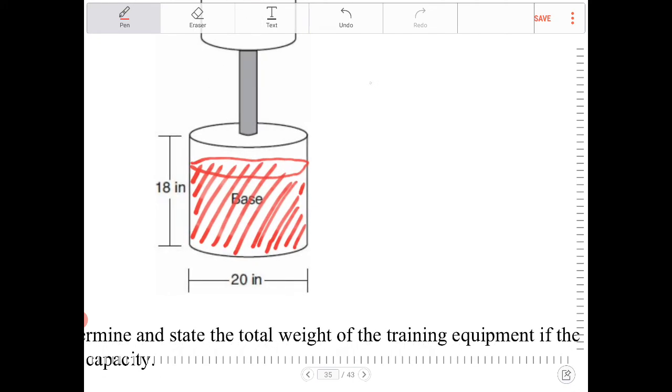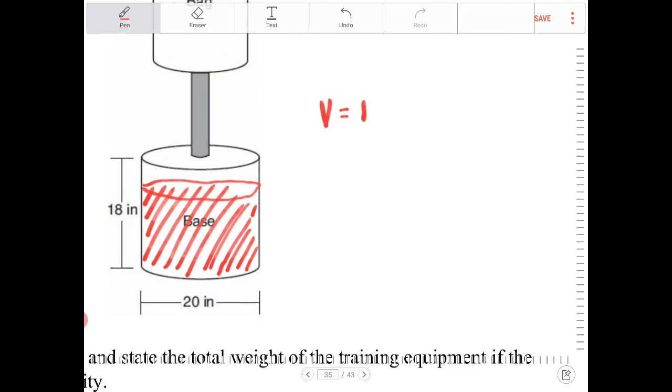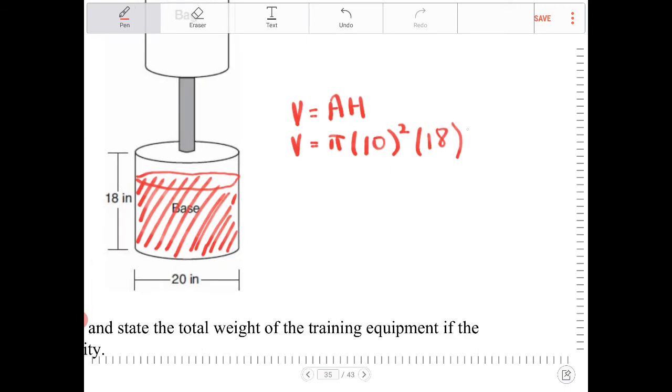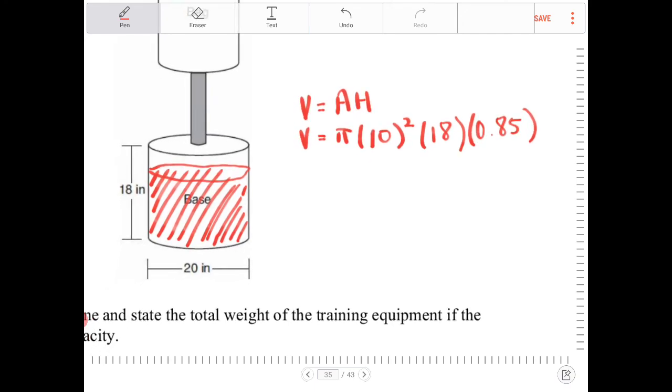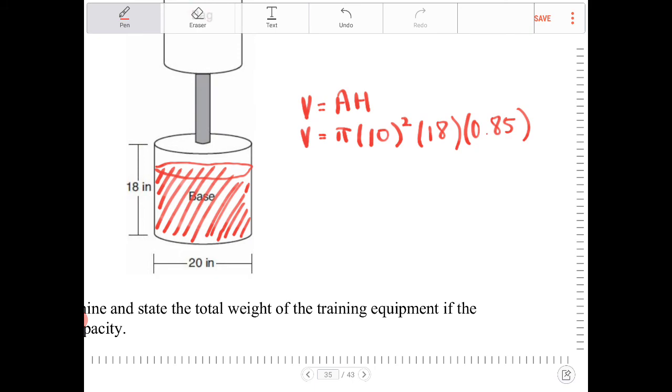So we are going to find out what is the volume of the cylindrical base. Because we are modeling this with a cylinder, the volume of a cylinder can be modeled by the area of the base times the height. So the area of the base here is a circle, so it is π times r squared. So r in this case is going to be 10 because it is half of 20 times 18. That is the total volume of the cylinder. However, because we are only filling this up to 85%, we are going to be multiplying this by 0.85. And that will give us the volume of sand that we are filling the base up with.